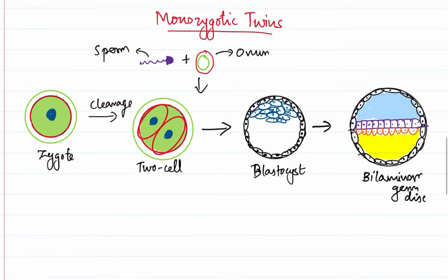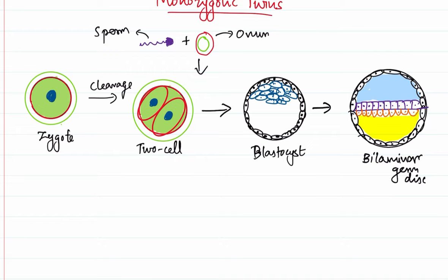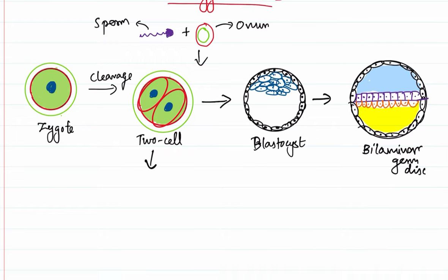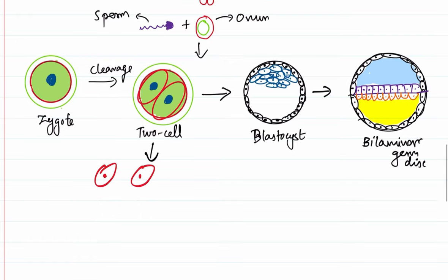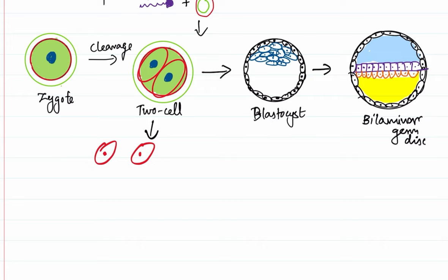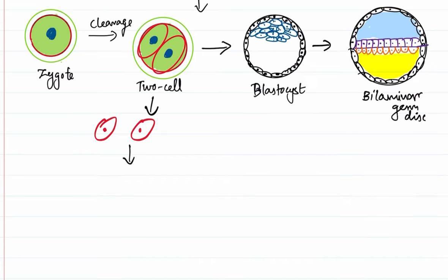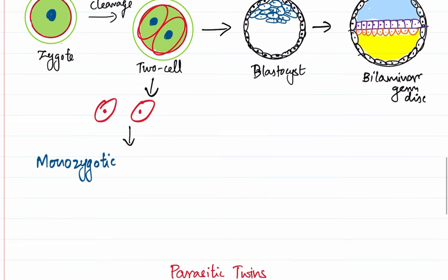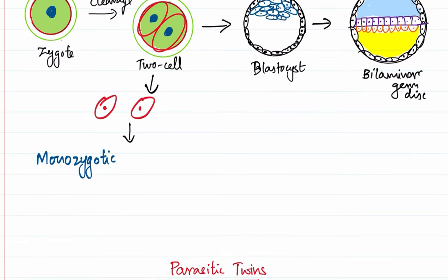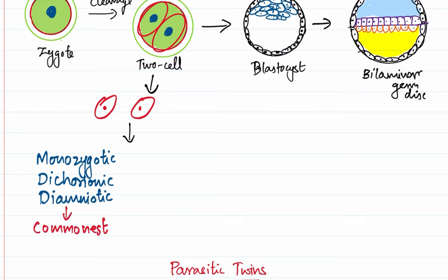When does monozygotic twin development occur? Monozygotic twins can develop right from the two-cell stage. If at the two-cell stage these two cells separate from each other, they will develop their own chorion and their own amnion, and then form their own placenta. Such twins are called monozygotic because they develop from a single zygote, but they have two chorions and two amnions. So they are called monozygotic dichorionic diamniotic twins, and these are the commonest variety of identical twins.